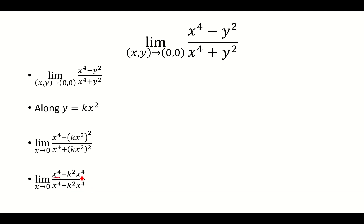You can factor out x to the 4th with all of these guys. And so that's going to cancel, and my limit is going to be 1 minus k squared over 1 plus k squared.